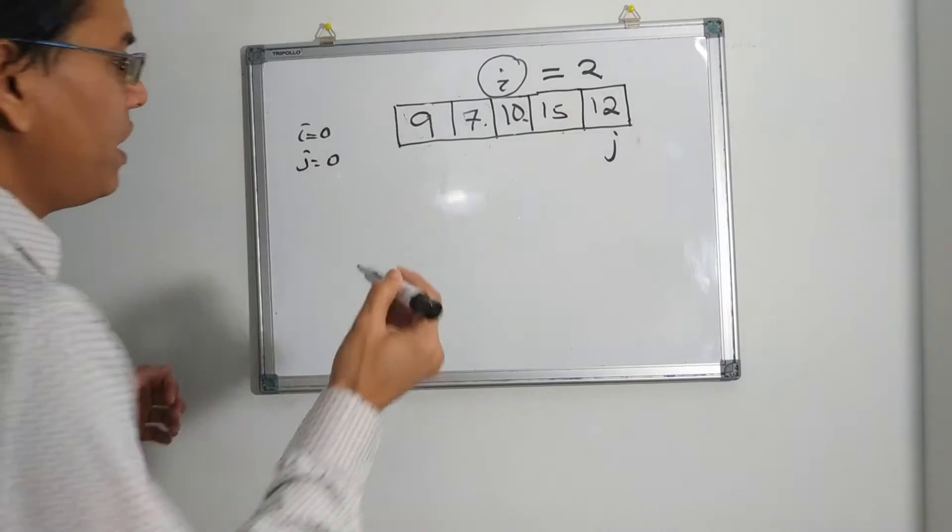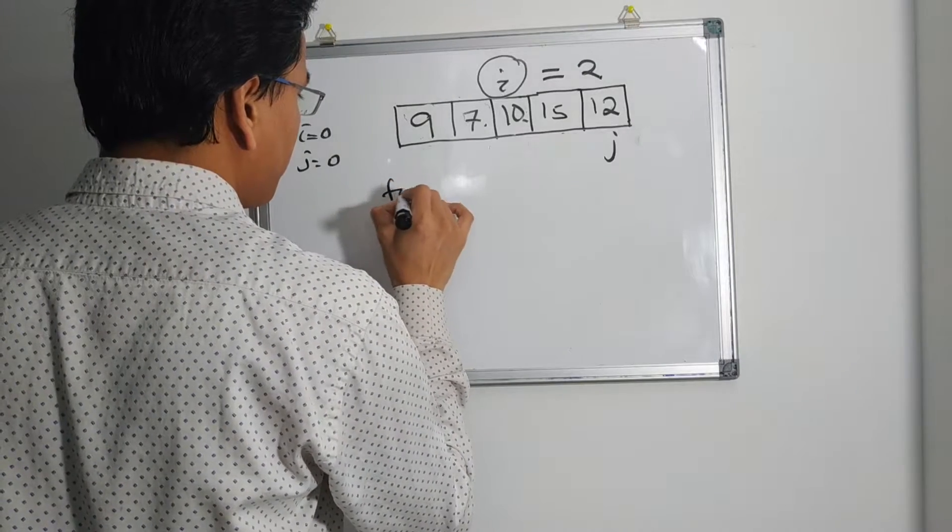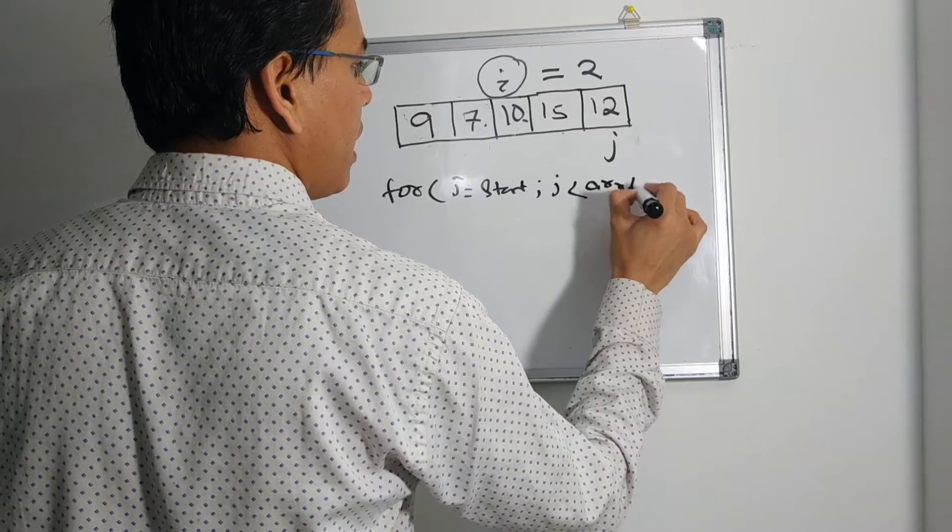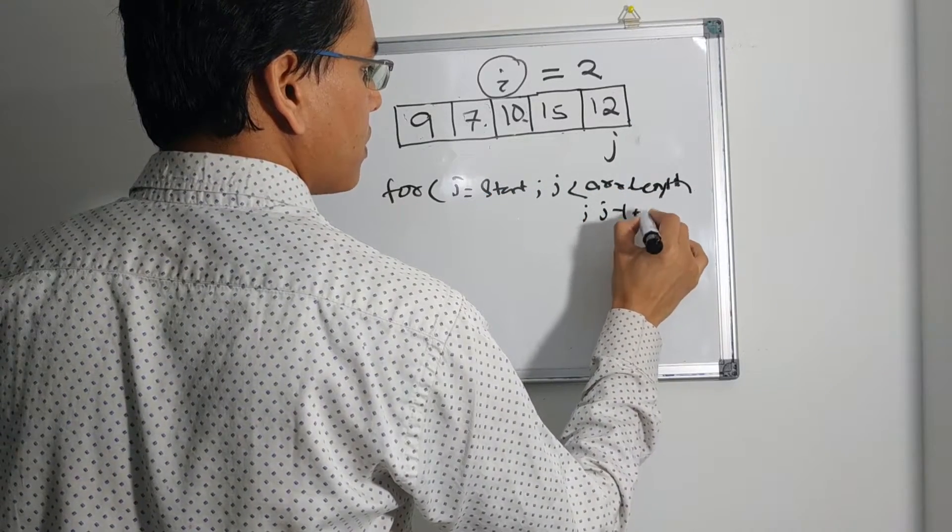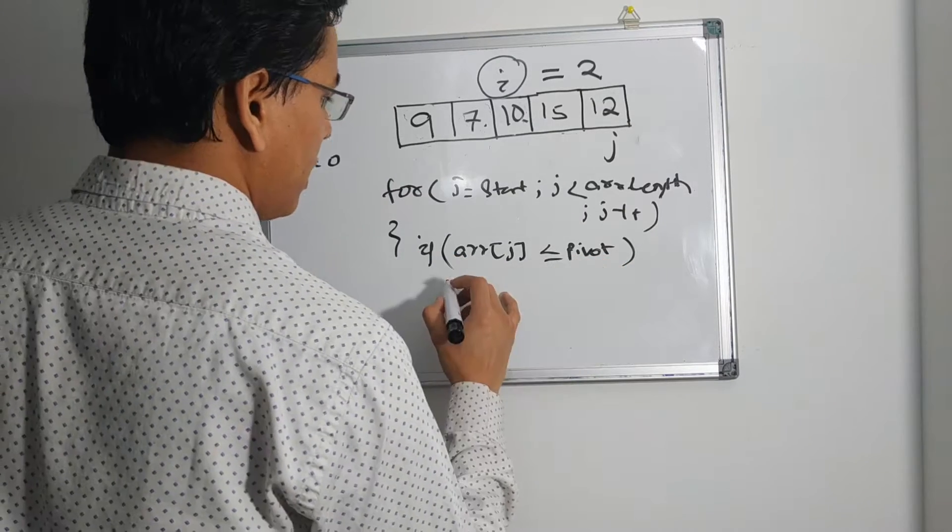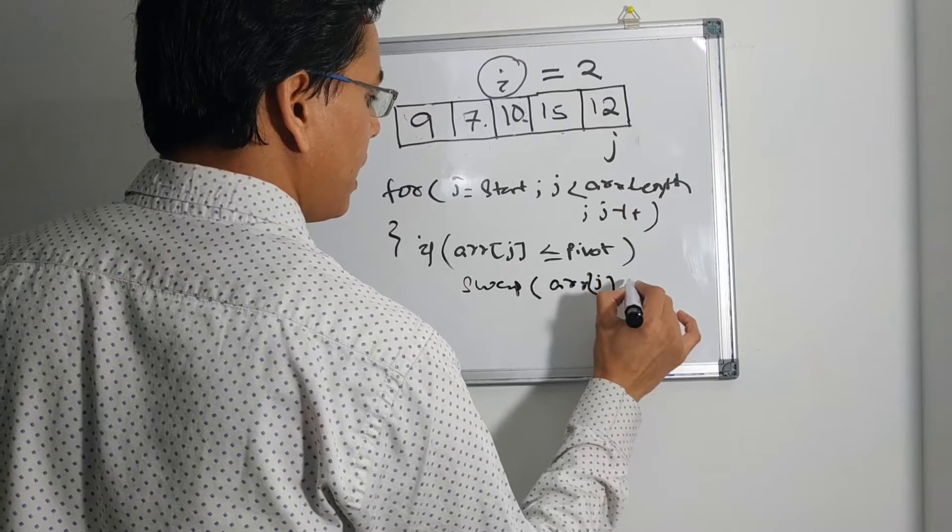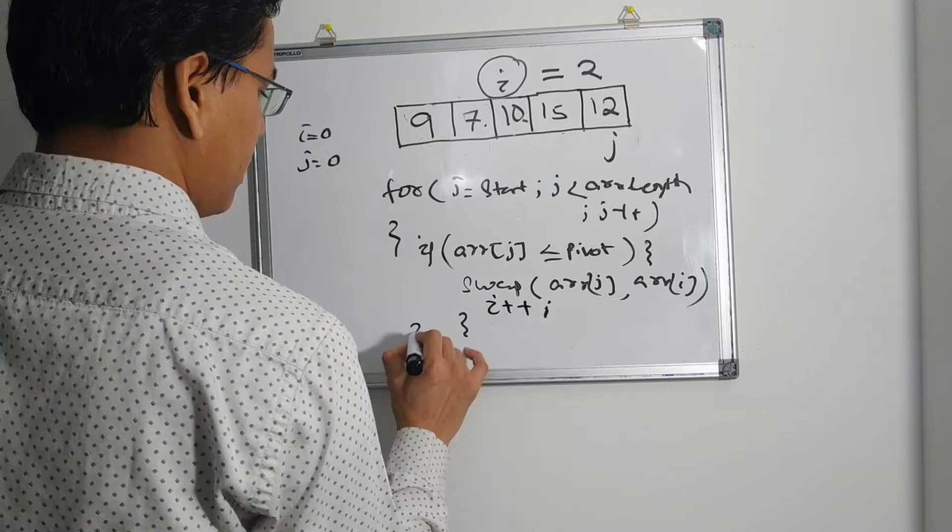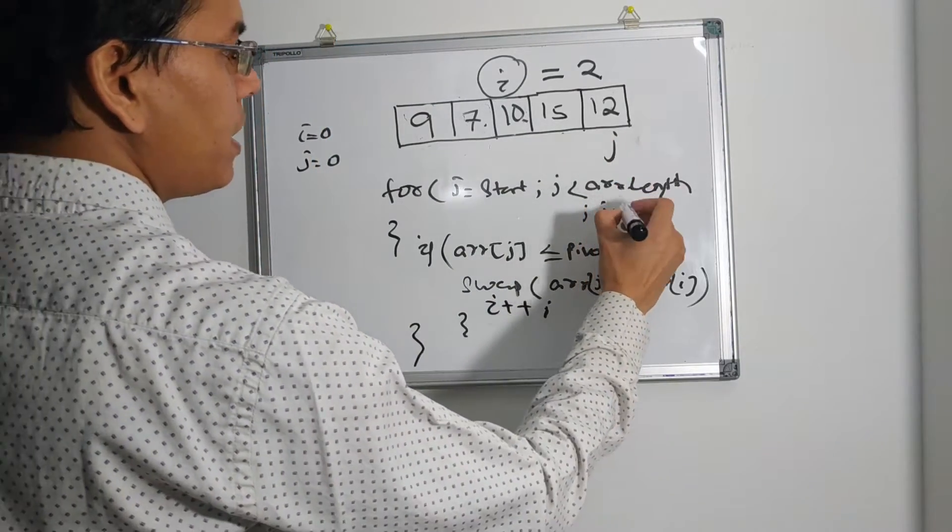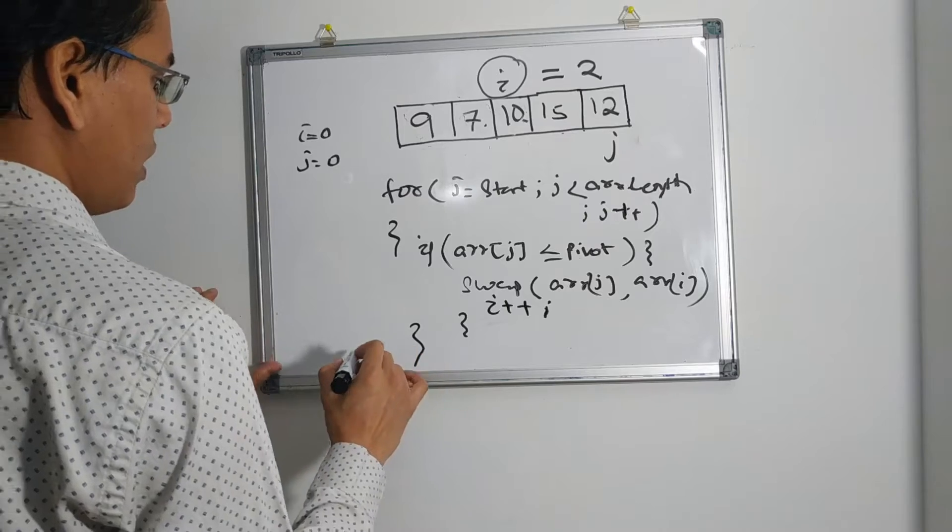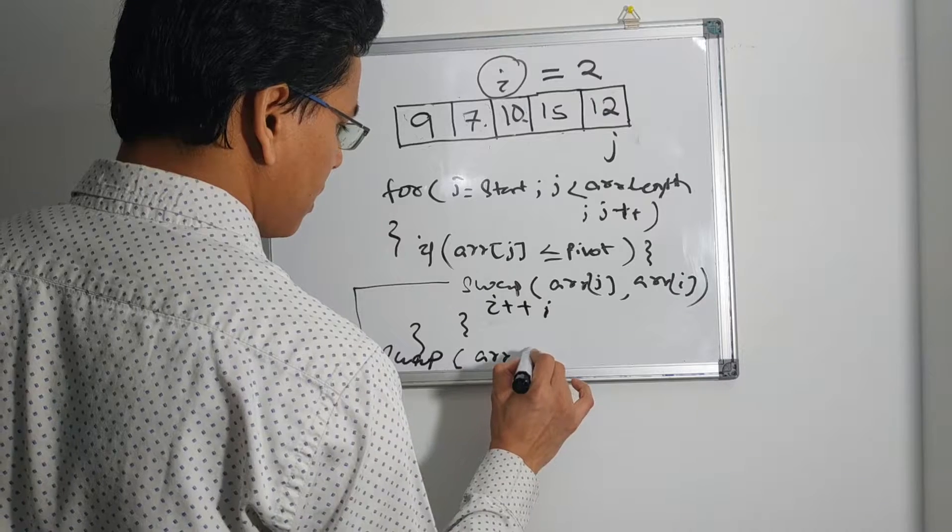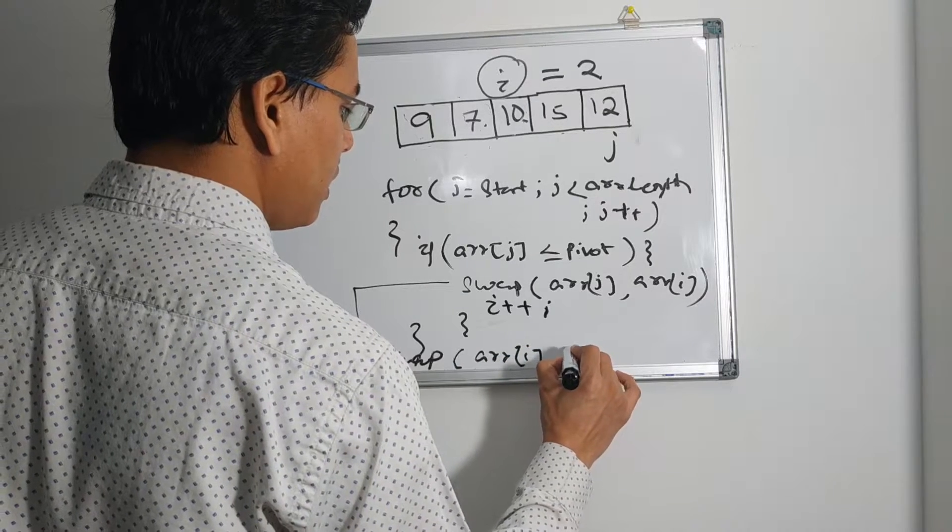So what we did here: in a for loop, for j equals start, j less than array length, j++. If array of j is less than or equal to pivot, then we swap array of j and array of i, i++. In the for loop, j is already incremented so we don't have to increment that anymore. After this for loop is over, again we swap the array of i with the pivot.